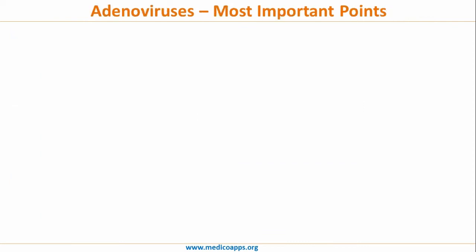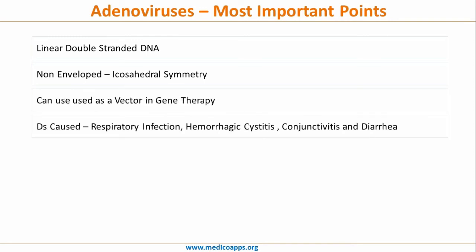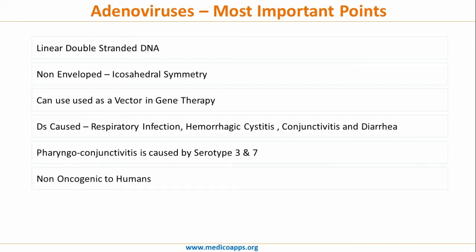The most important exam points are: adenovirus is a linear double-stranded DNA, non-enveloped virus with icosahedral symmetry. Importantly, all non-enveloped viruses — whether DNA or RNA — have icosahedral symmetry. It can be used as a vector in gene therapy. Diseases caused include respiratory infections, hemorrhagic cystitis, conjunctivitis, diarrhea, and pharyngoconjunctivitis (serotypes 3 and 7). It is non-oncogenic in humans and is one of the most common causes of the common cold and coryza.